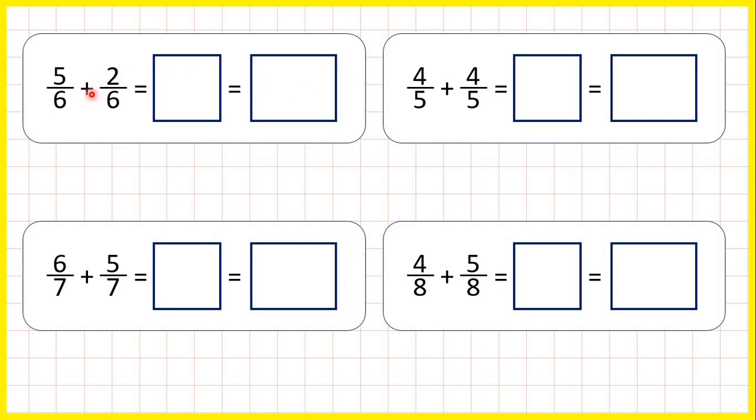So when we're adding fractions, we keep the denominator the same in our answer, and 5 plus 2 is 7, so as an improper fraction, we have 7 sixths.